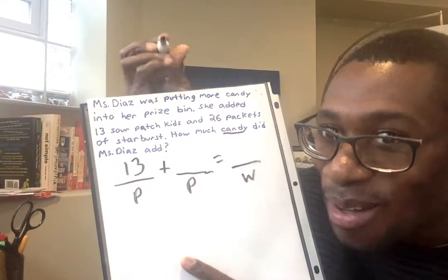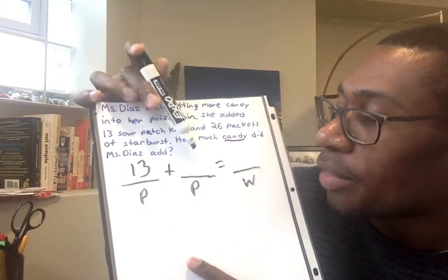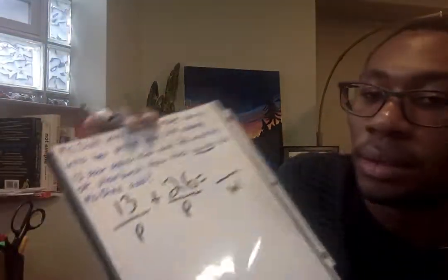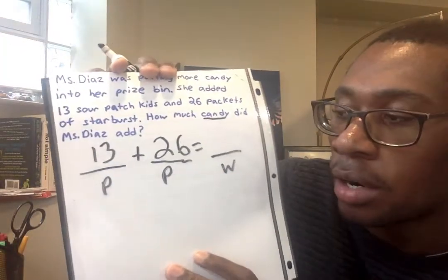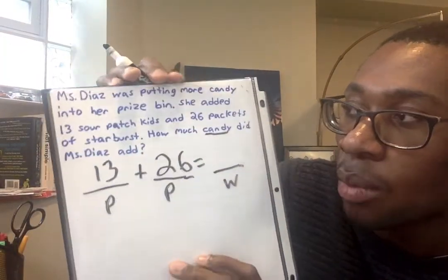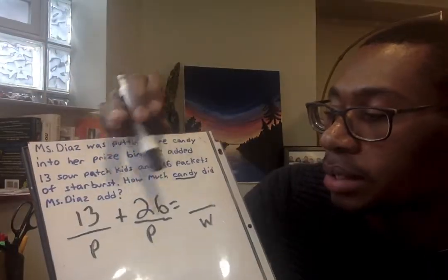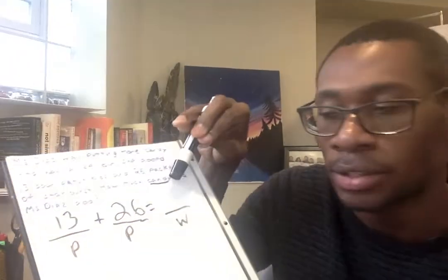And then the other part that we know is going to be 26 for 26 starbursts. So I'm going to write 26 for the other part. And once our numbers are all filled out, we want to go ahead and show our base-10 picture. So I'm going to do 13 plus 26 equals blank, our missing hole.